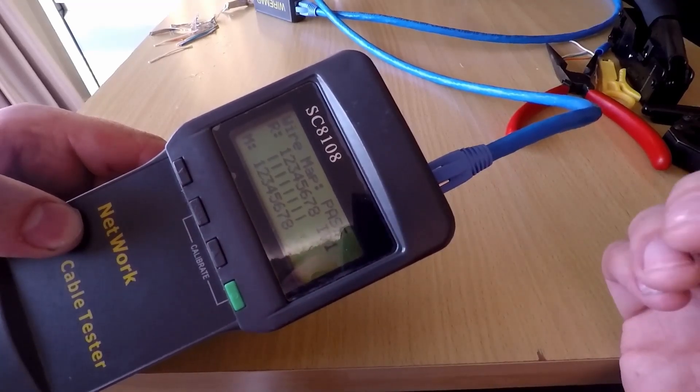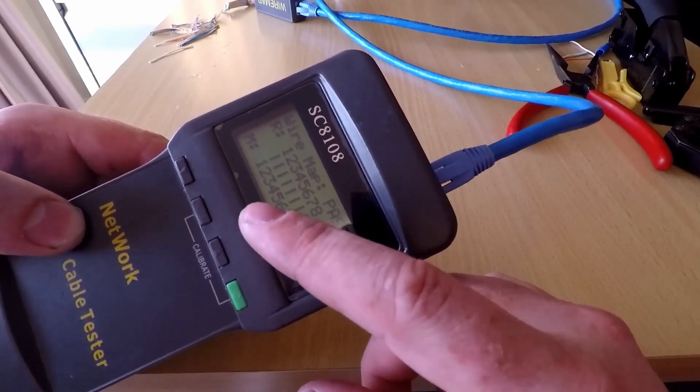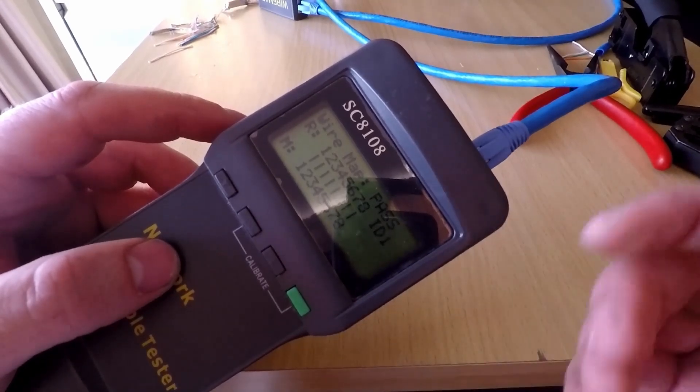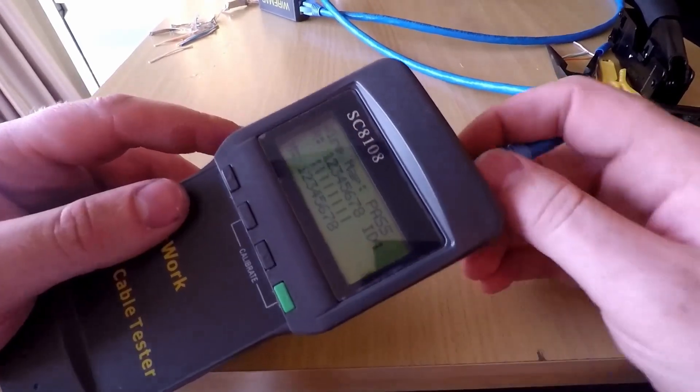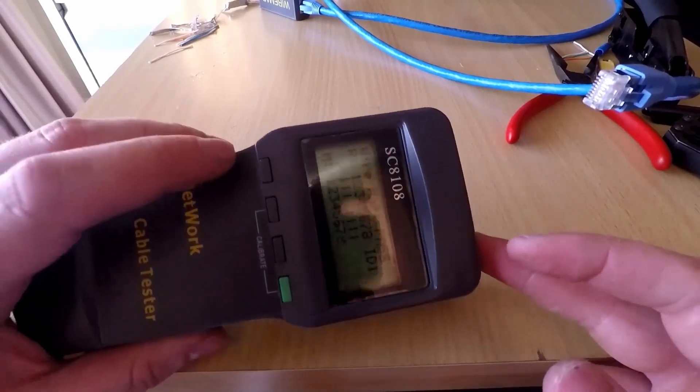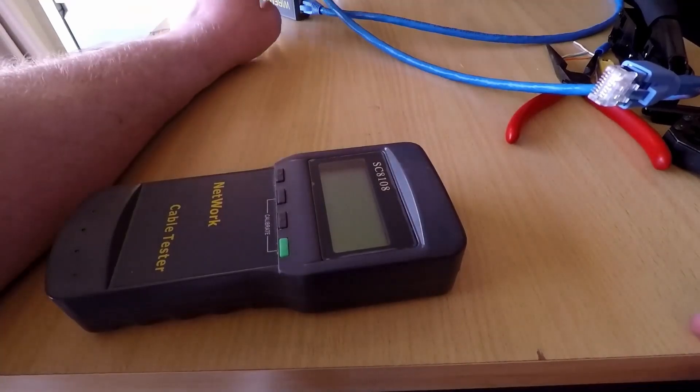Now, on this one here, it can't pick up what end of the cable it is. But with a better tester, you'll be able to distinguish that. This one here is designed for CAT 6, not CAT 6A, as I say. And I will be getting one at some point in the future.